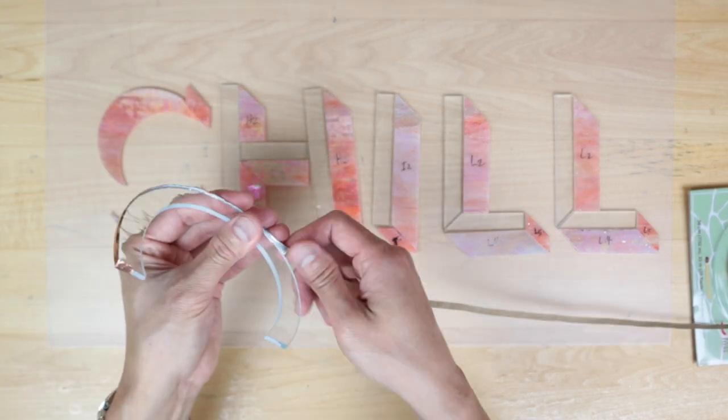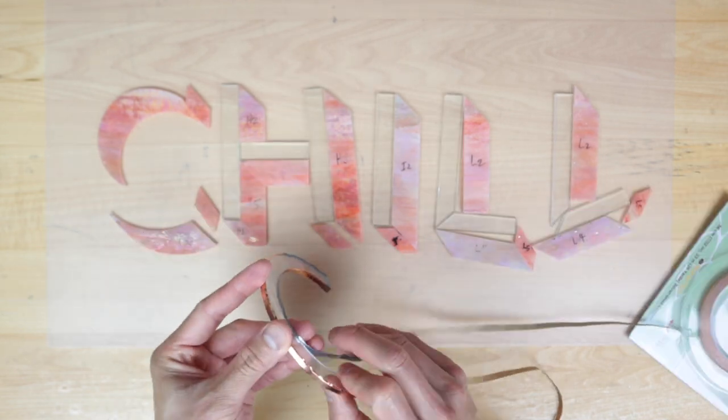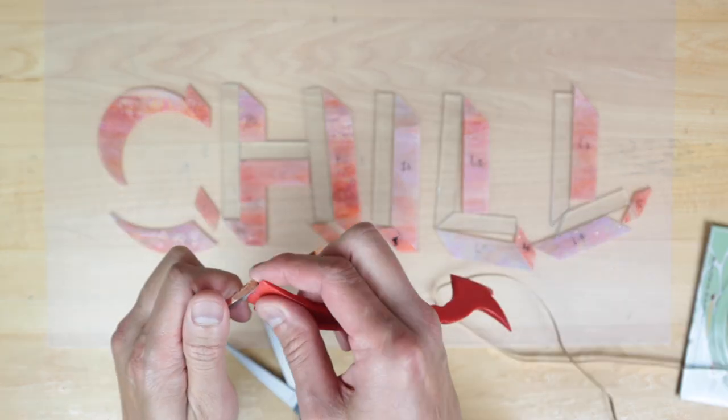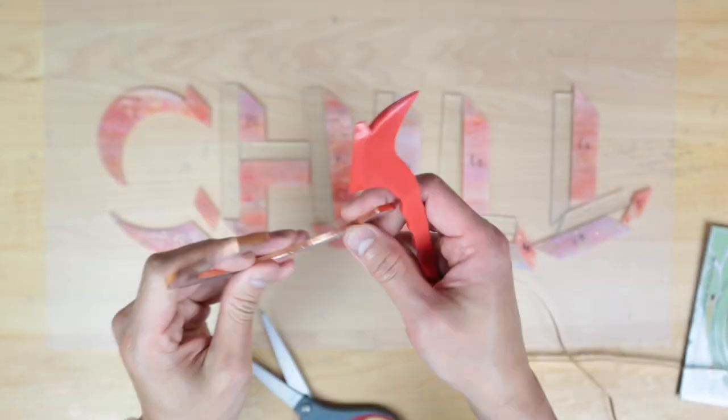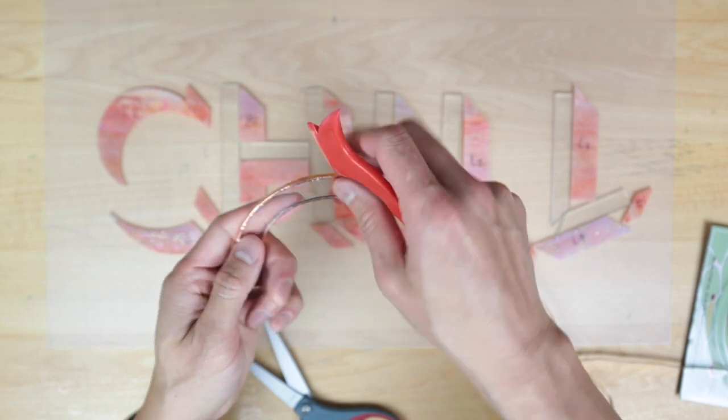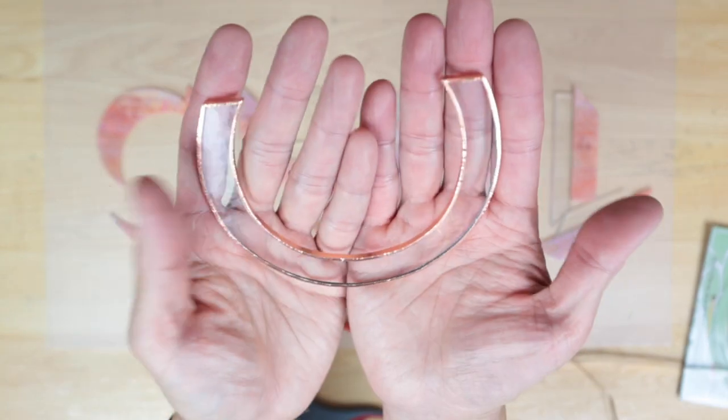So normally the copper foiling step is a fairly easy step. But in this case, it's become a little bit more nerve-wracking. So I'm just being super careful about it. Because I don't think I want to go through all that again. Ah yes, we got it.